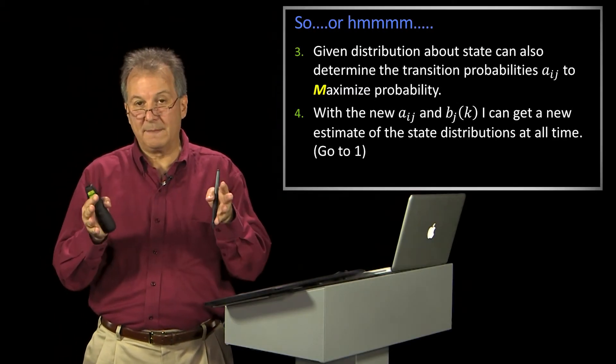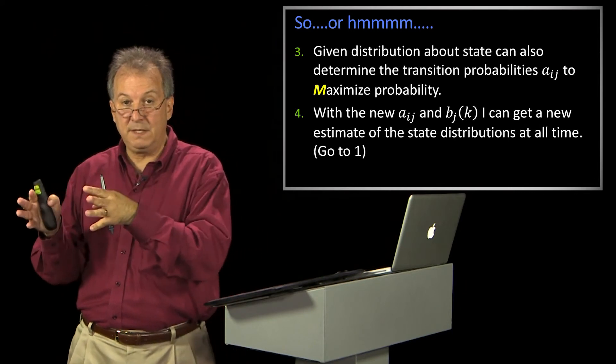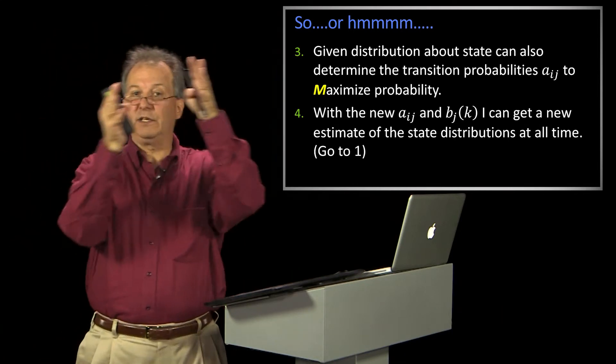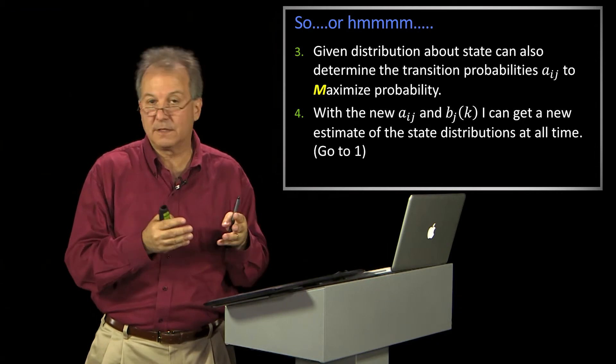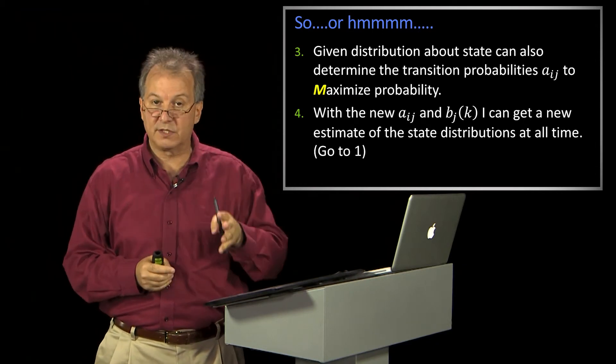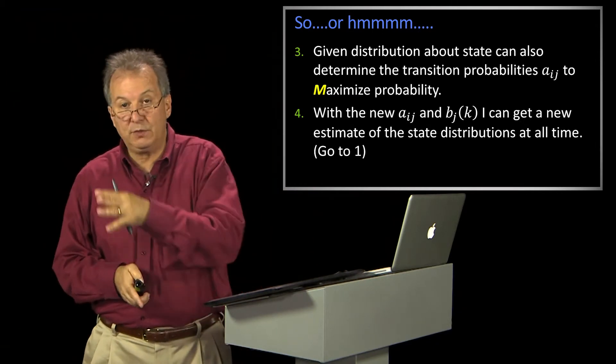So after I do the M step, called the maximization step, of getting the new A's and B's, I now have a new machine. I can go back and do the E step again, estimate the probabilities of being at a particular state at time t, and redo that process.